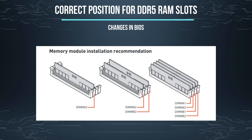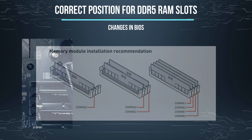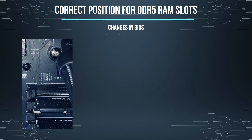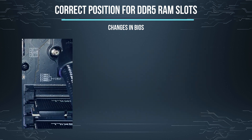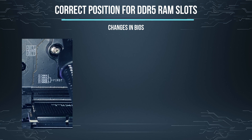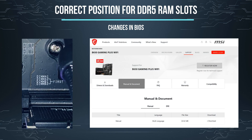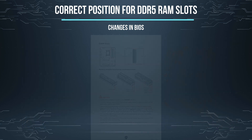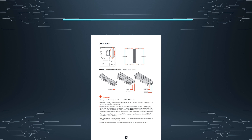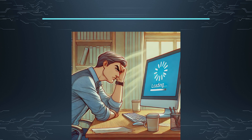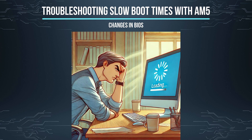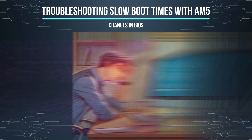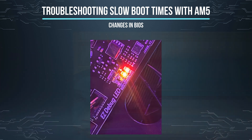For example, for dual sticks on a motherboard they need to be placed in slot DIMM A2 and the other one in DIMM B2. For my motherboard the slots are numbered on the motherboard itself. If not, refer to your motherboard's manual for more information, because every motherboard is different.